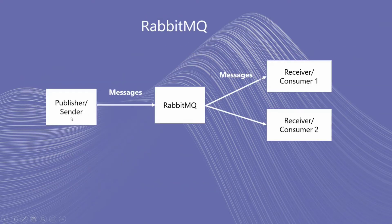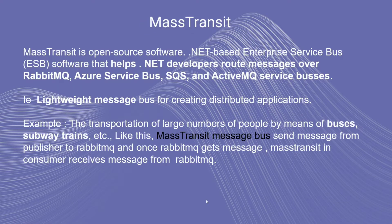Once a Sender, Publisher, or Producer sends a message to RabbitMQ, RabbitMQ distributes the received message to the Receiver or Consumer. MassTransit is open source software — a .NET based enterprise service bus software that helps .NET developers route messages over RabbitMQ, Azure Service Bus, SQS, and ActiveMQ service buses.